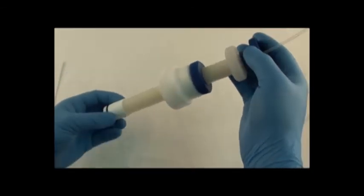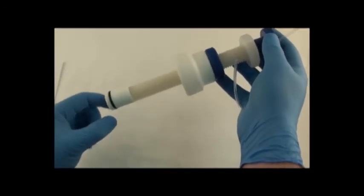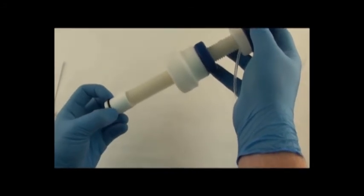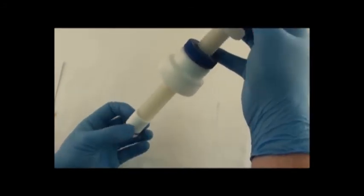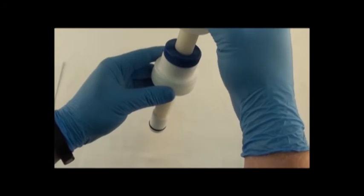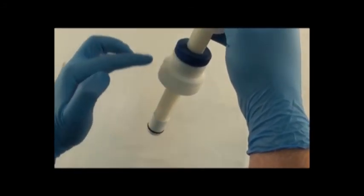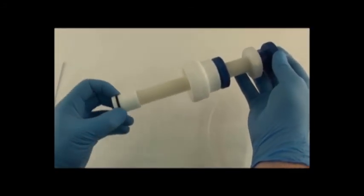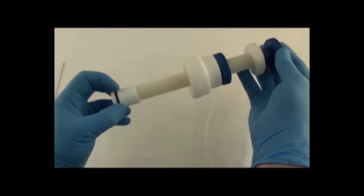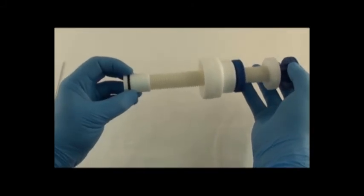And once you've done that and you want to secure the o-ring, seal it against the inside of the column, you tighten the top knob. And that compresses this threaded rod. And it compresses this o-ring against the inside of the chromaflex column and seals it.